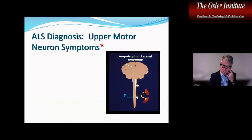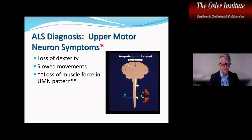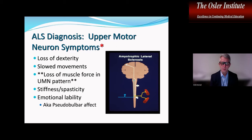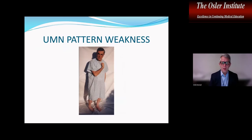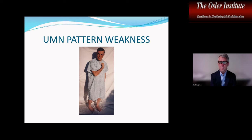For ALS diagnosis, look for upper motor neuron symptoms: loss of dexterity, slow movements, loss of muscle force in an upper motor neuron pattern, stiffness, spasticity, and emotional lability — also called pseudobulbar affect. The upper motor neuron pattern of weakness is important: in the arms, the elbow and wrist flexors maintain more strength than the extensors, giving a flexion posture. In the legs, the extensors are stronger than the flexors.